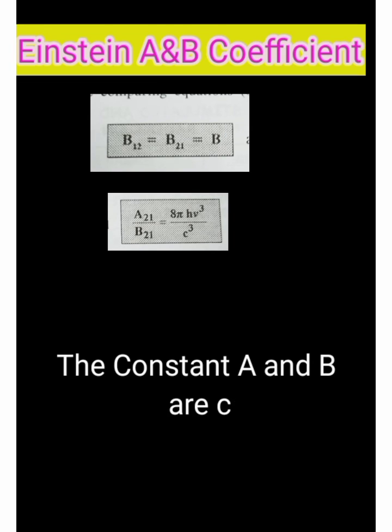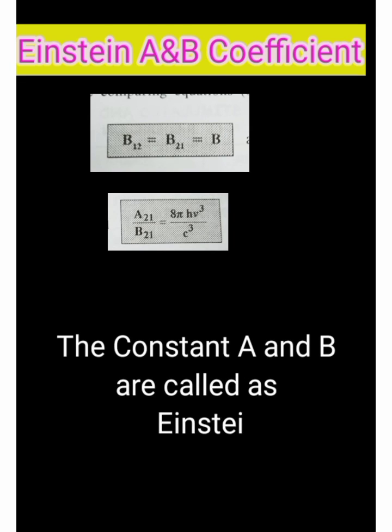Comparing these two equations, we can write B12 is equal to B21 is equal to B. Otherwise, A21 by B21 is equal to 8 pi H nu cube by C cube.